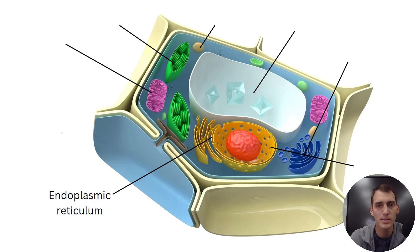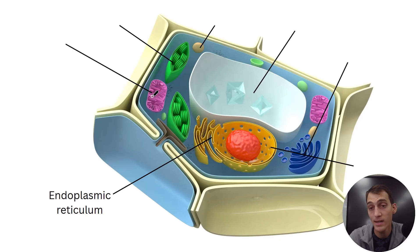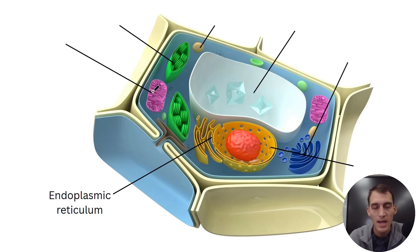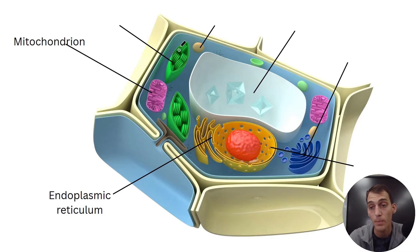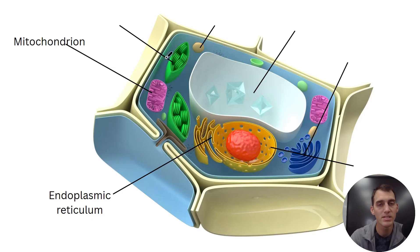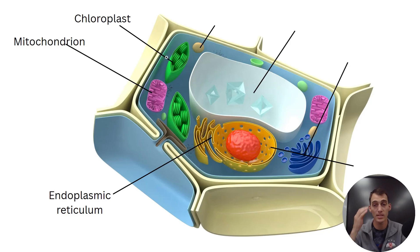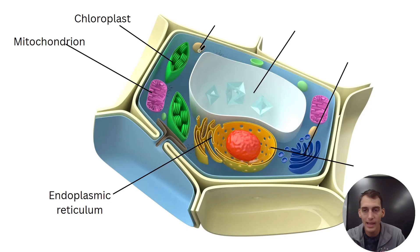Going clockwise: the structure with a highly folded inner membrane and a smooth outer membrane is the mitochondrion — the site of ATP synthesis. The green structure with inner membranes around discs and a smooth outer membrane, found in plant cells but not animal cells, is a chloroplast. The membrane-bound sack containing hydrolytic enzymes that break stuff down is a lysosome.